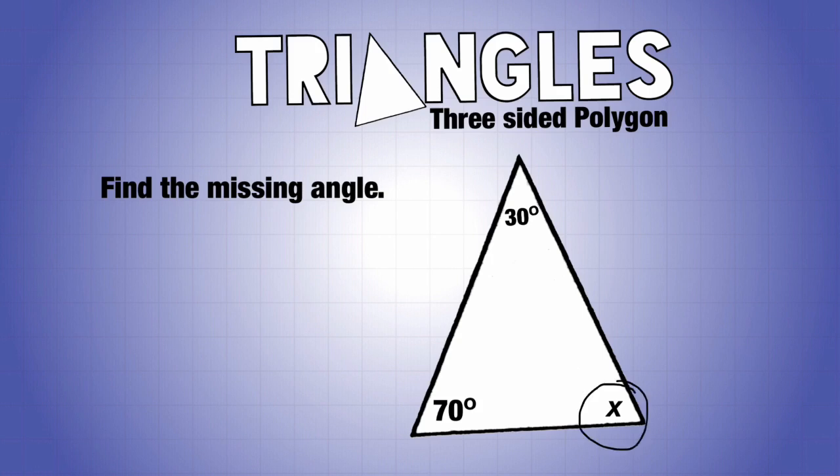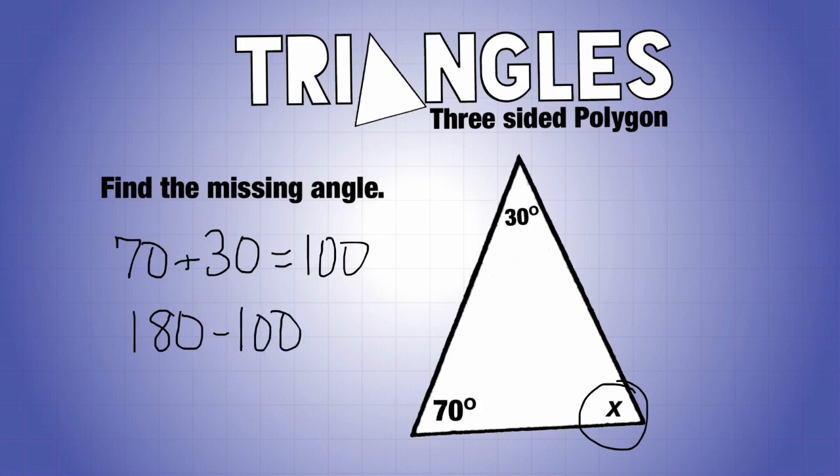What we do is we take 70 plus 30 and we get our answer of 100. Now like I said before, it's composed of 180 degrees, so then we take our 180 minus 100 to give us the answer of 80 degrees.